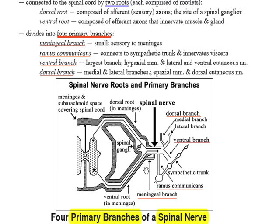Another branch, the ramus communicans, connects the spinal nerve with the sympathetic trunk. The two major branches of a spinal nerve are the dorsal branch and the ventral branch. Both branches have a full complement of nerve fiber types; their only difference is the regions that they innervate.